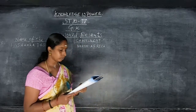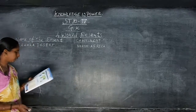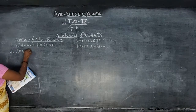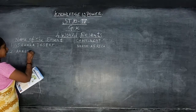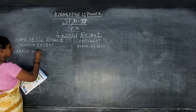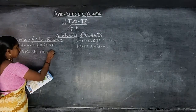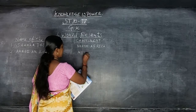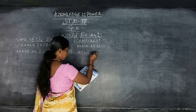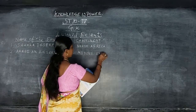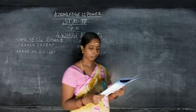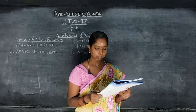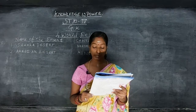Number two: Arabian Desert — A-R-A-B-I-A-N D-E-S-E-R-T. Continent: Middle East — M-I-D-D-L-E E-A-S-T. Area: 2,330,000 square kilometers.